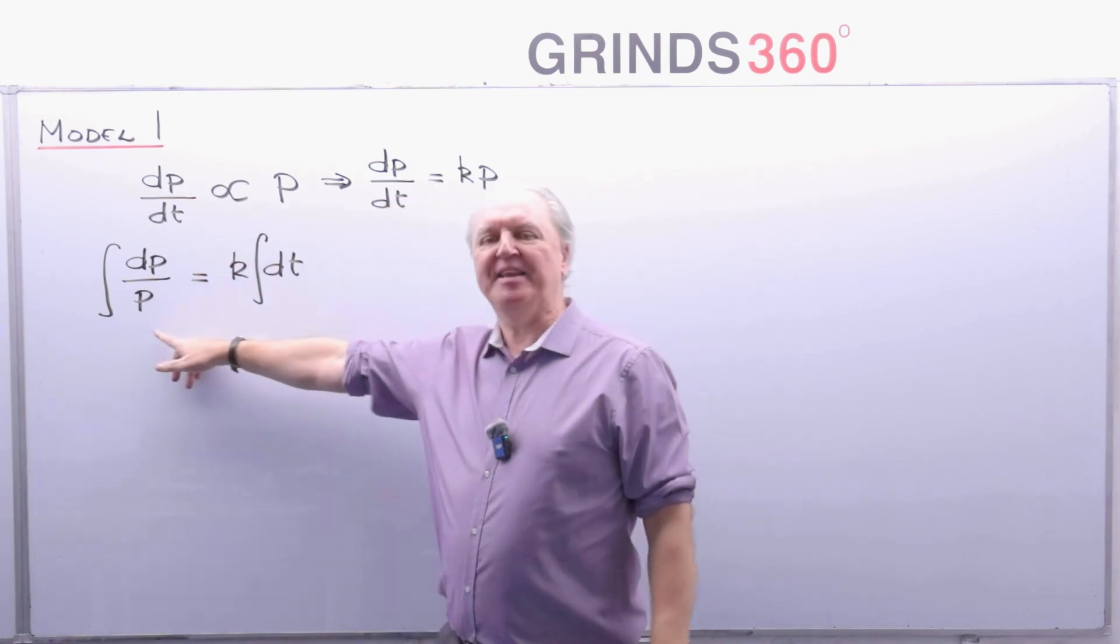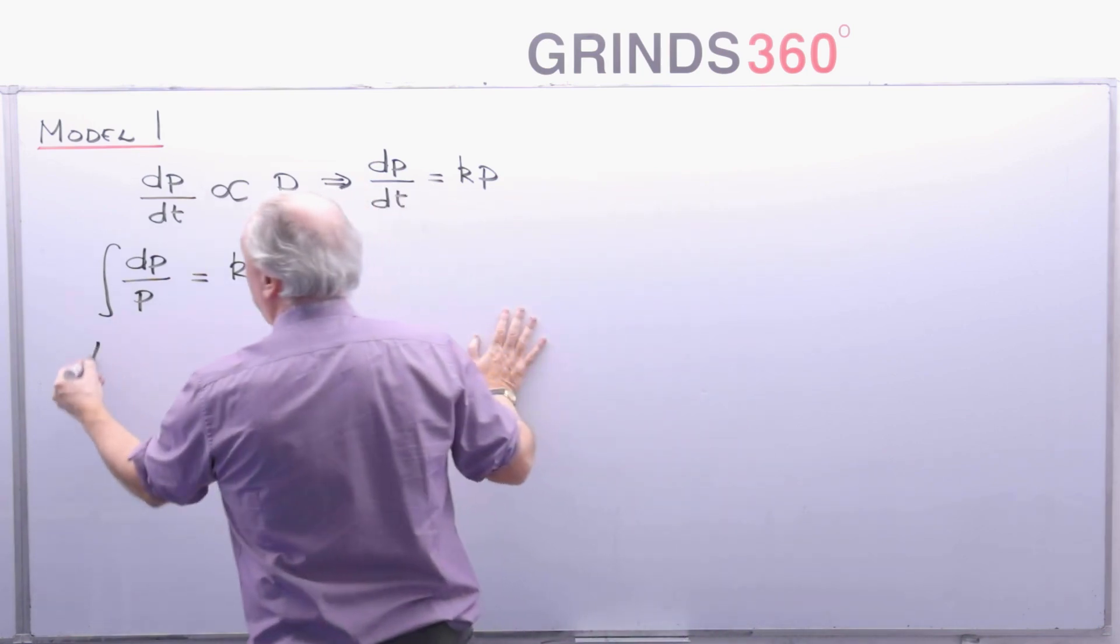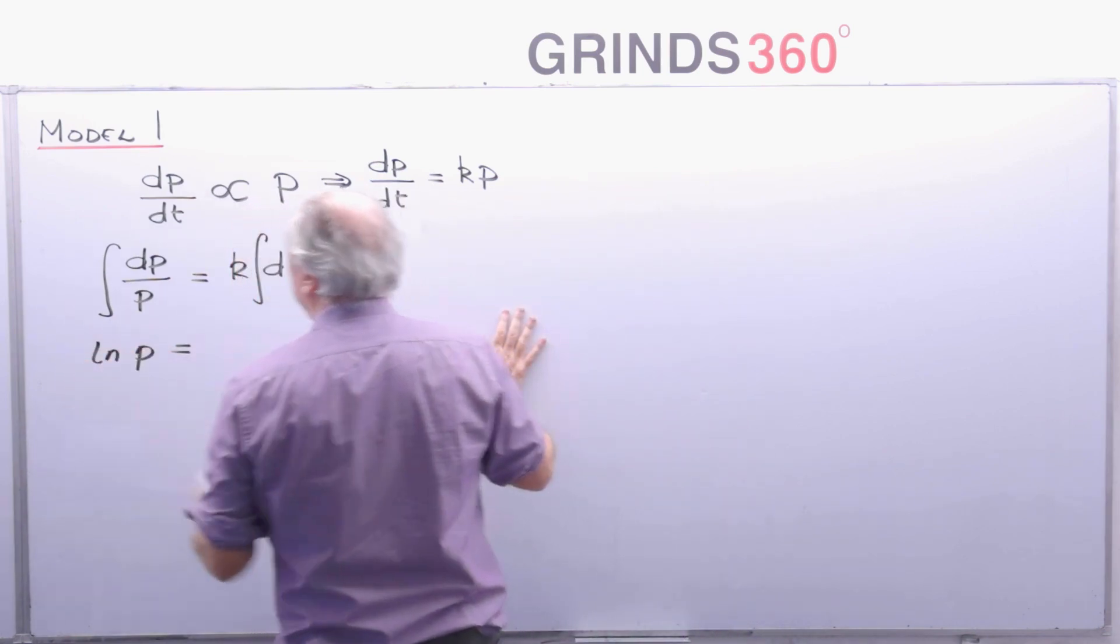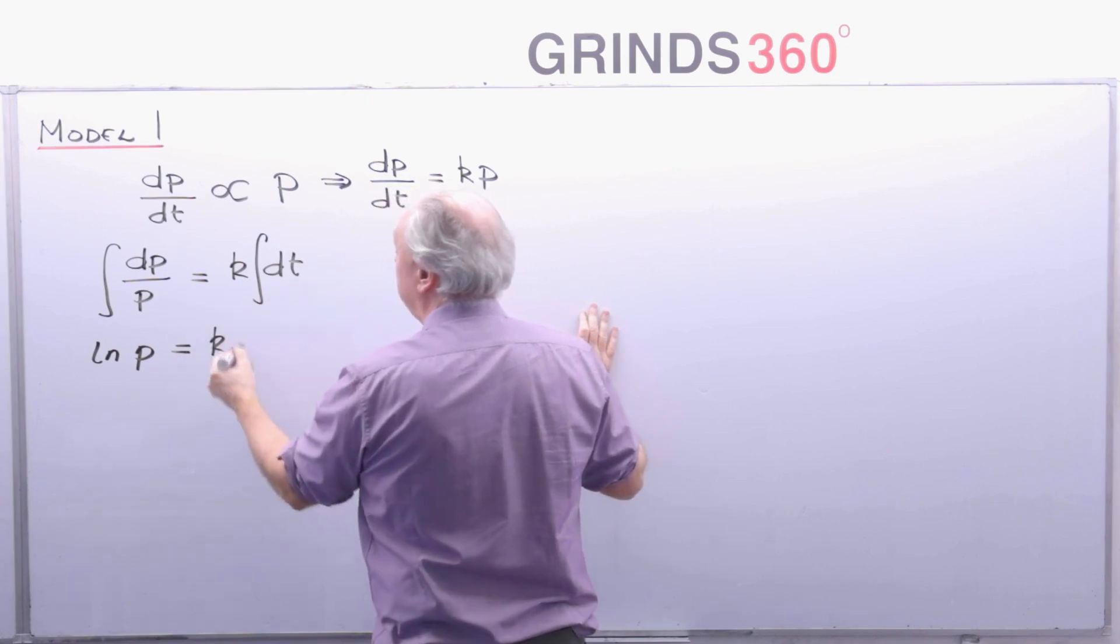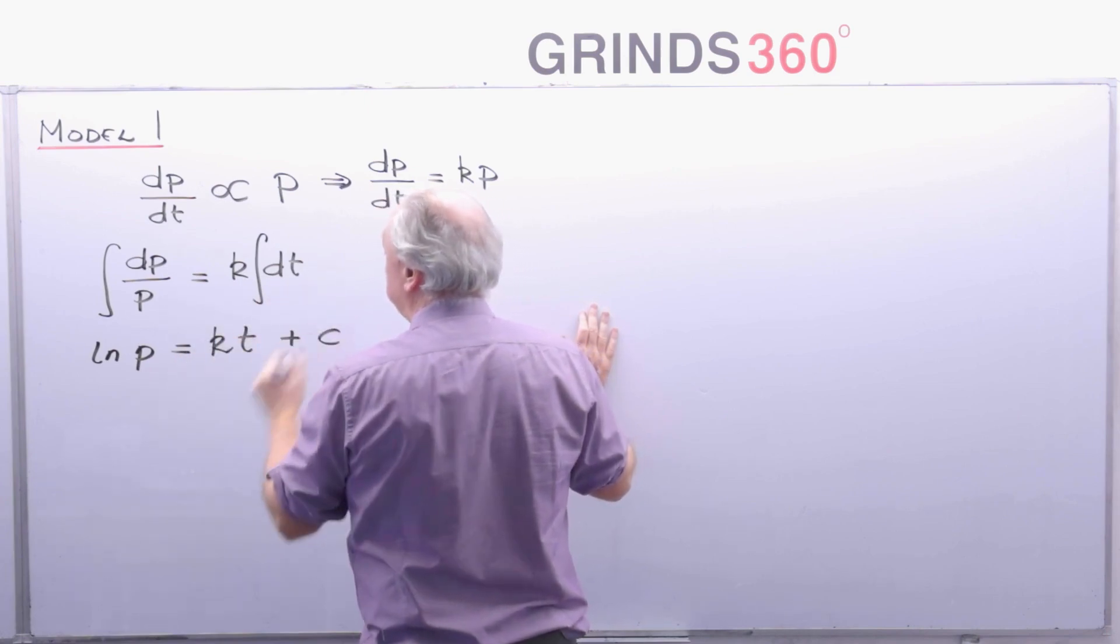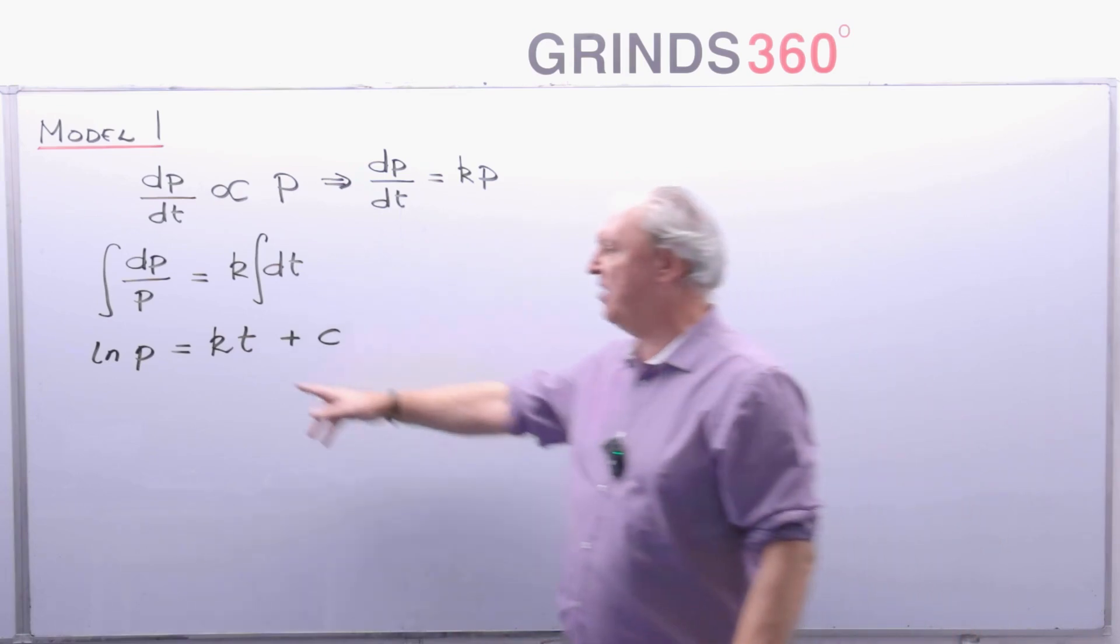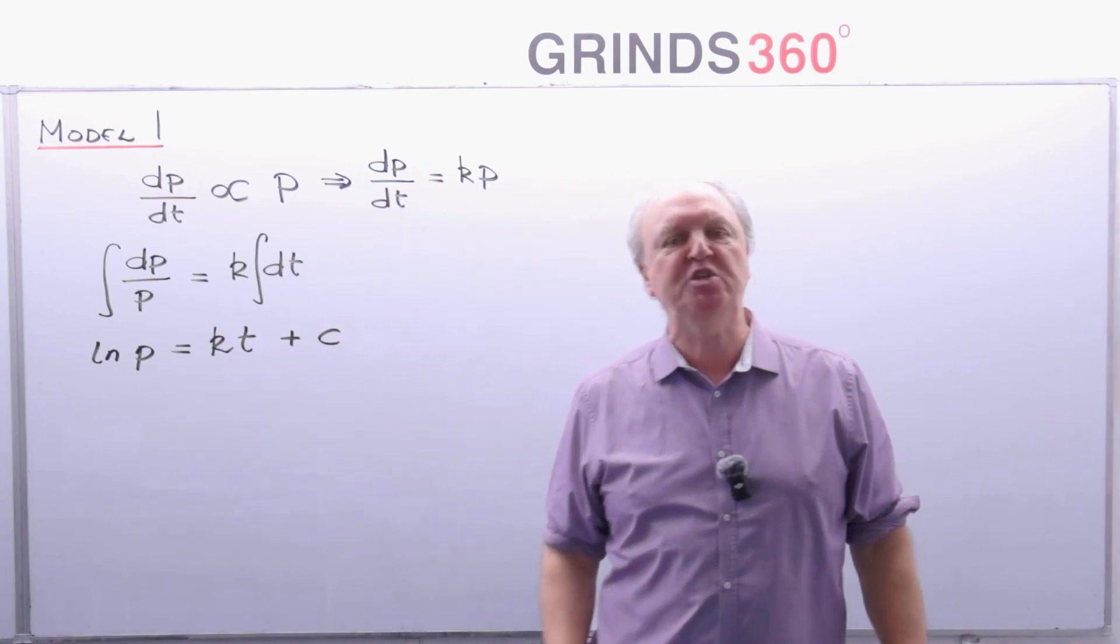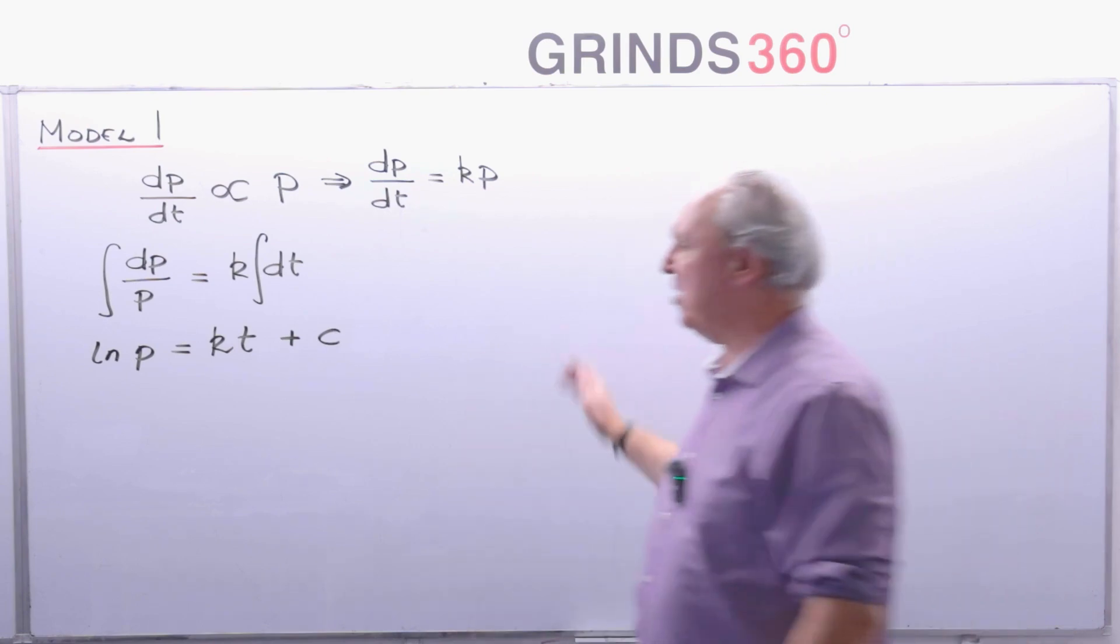You can integrate that. It's one over p. It's the inverse linear function. You know what the answer to that is. That's the natural log of p and that's equal to kt plus c. So there's my solution. I've got two constants in it. I'm going to have to use extra information to work out those constants.